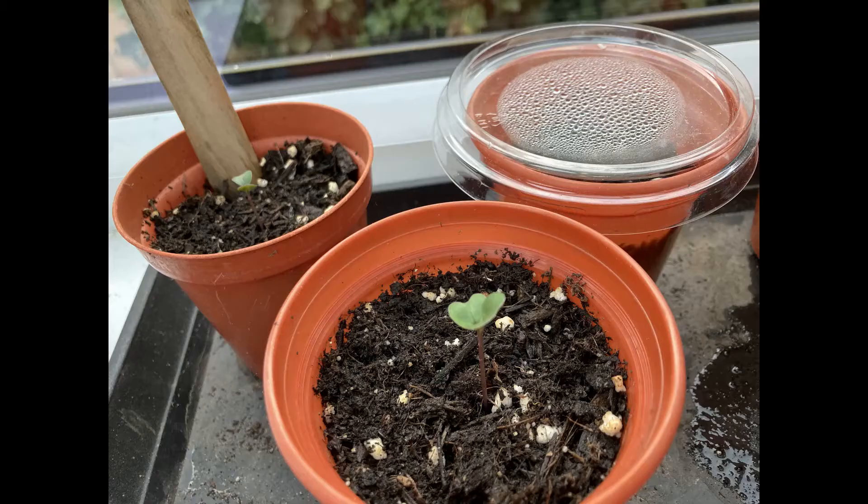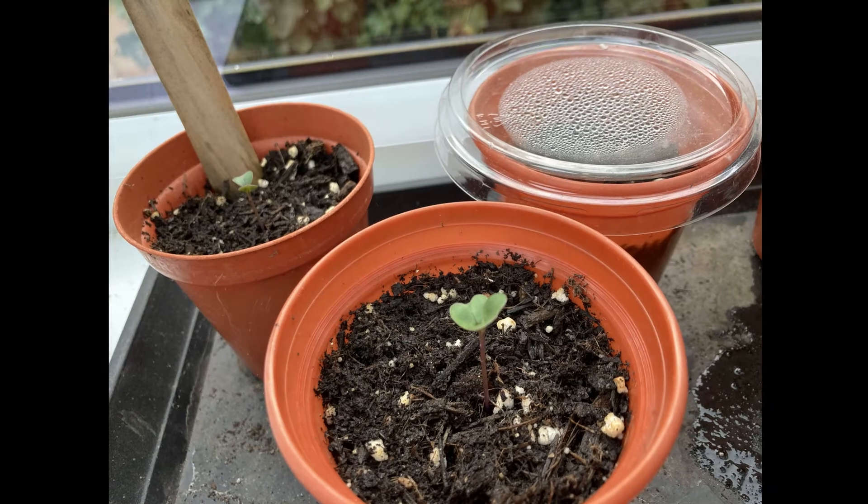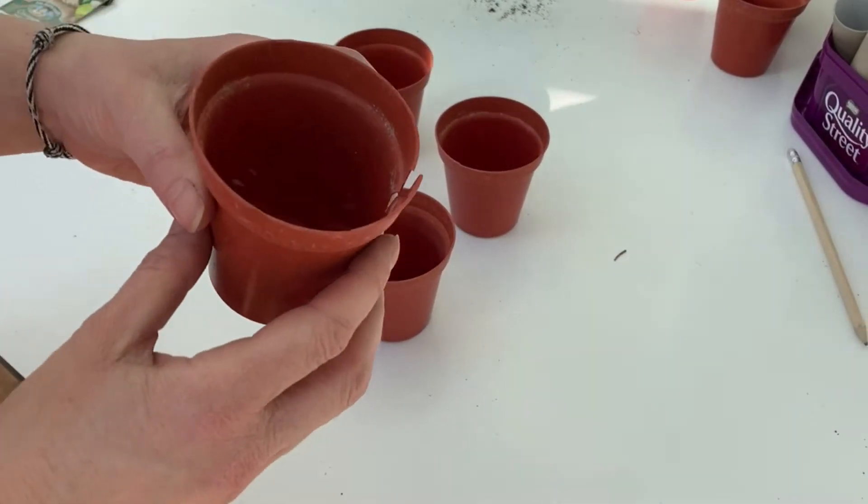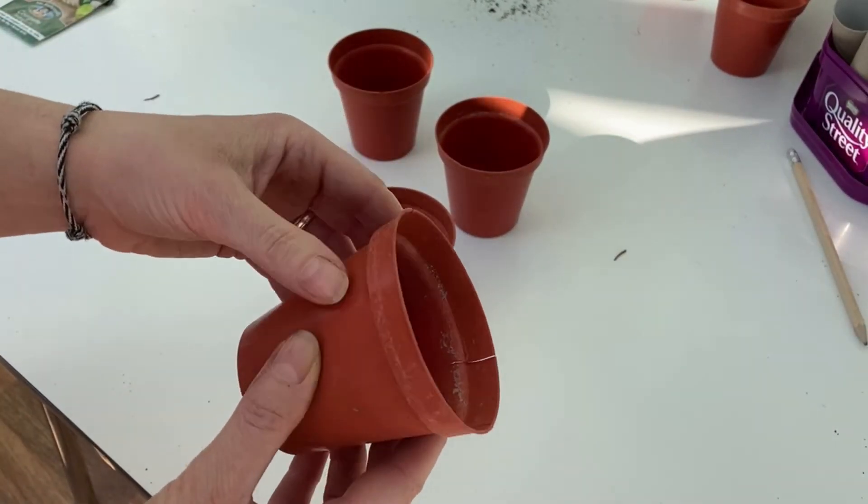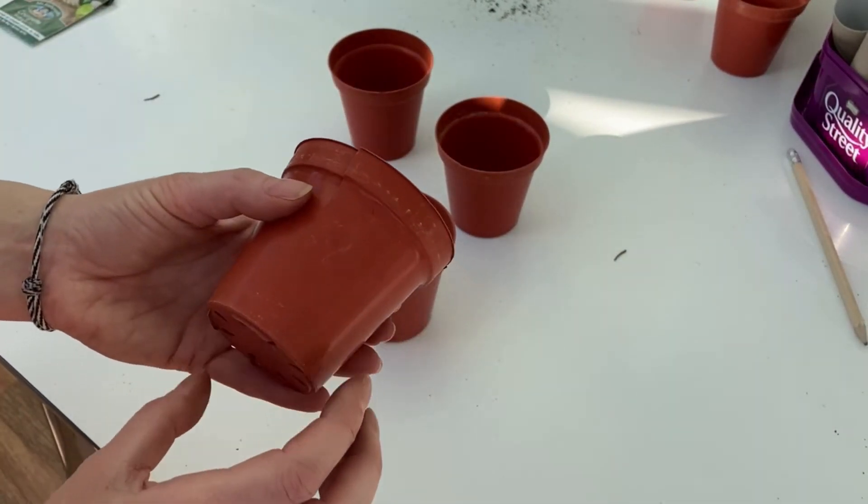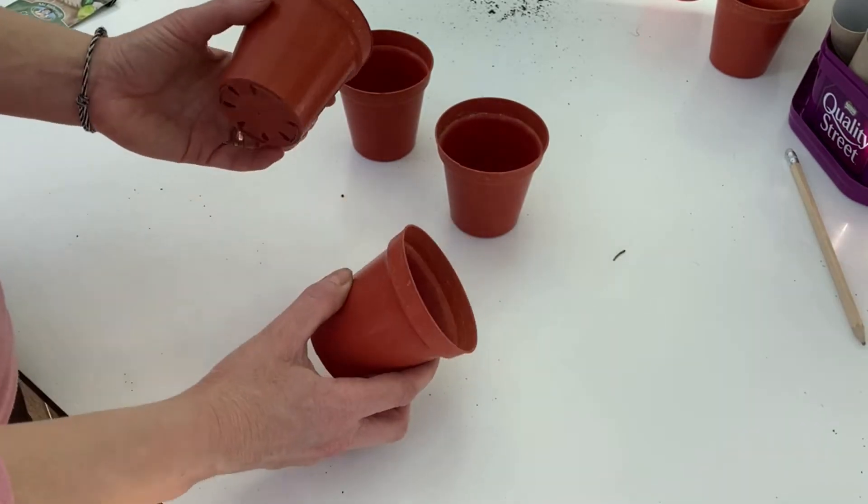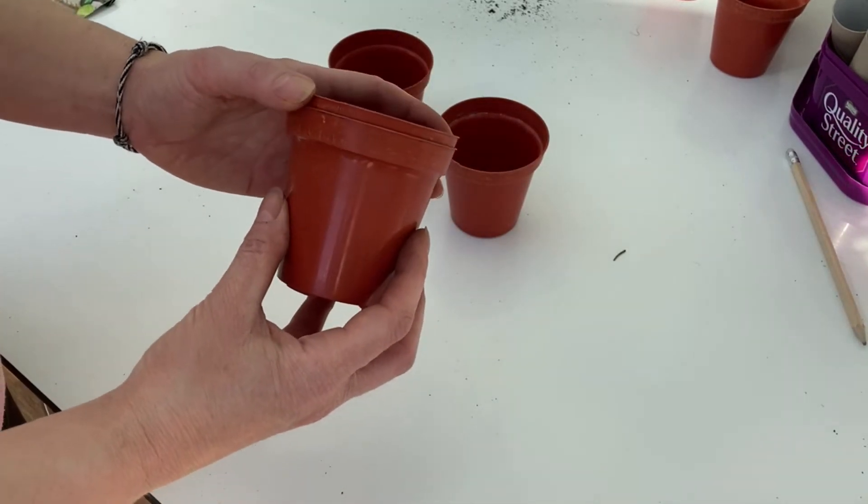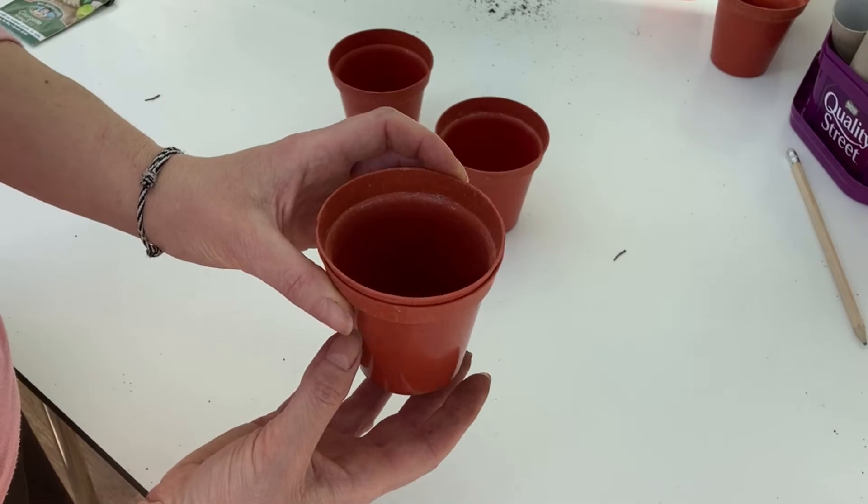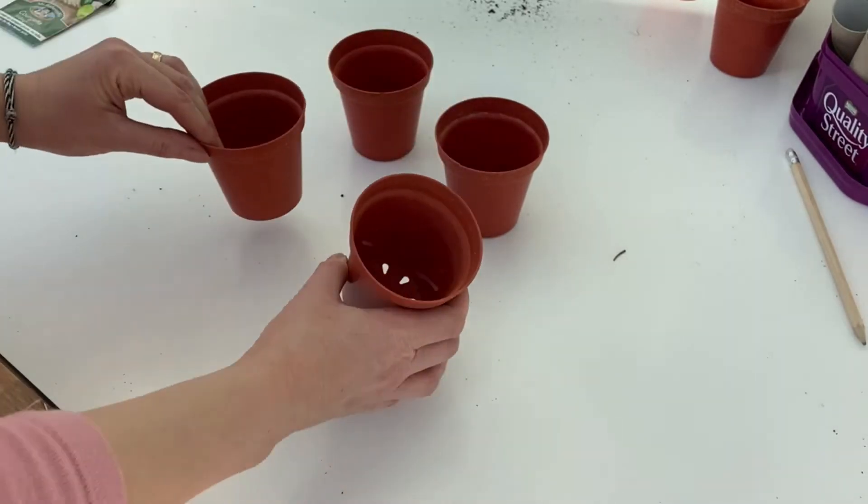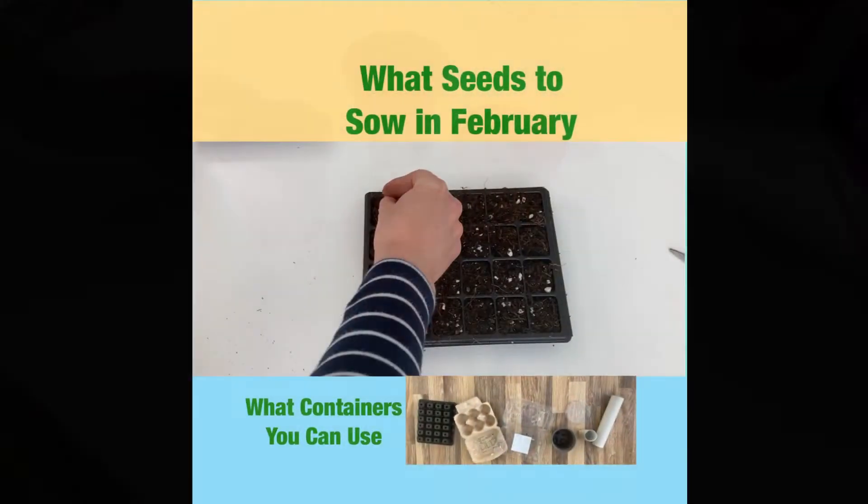This is what they look like when they just start to come through. These pots, which I've had for years and years now, are starting to split and crack, so I can always just double them up and keep them going a little bit longer. If you're interested in containers that you can recycle into seed sowing pots, then check out this video. I'll leave the link in the description below.